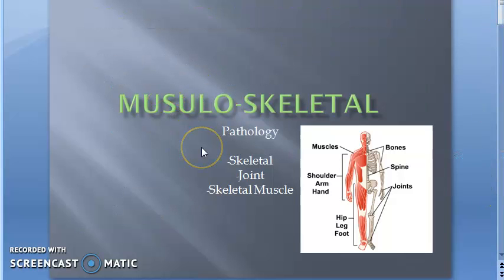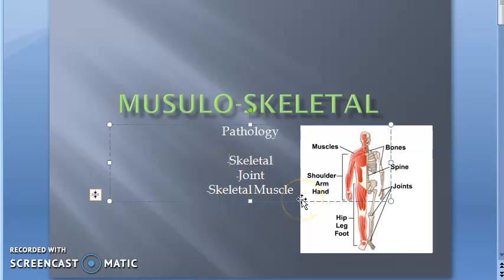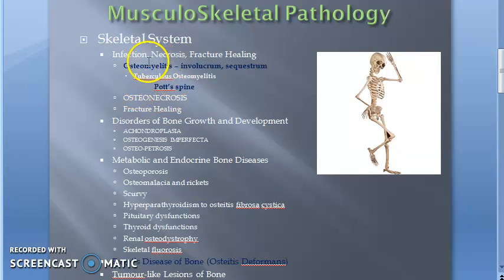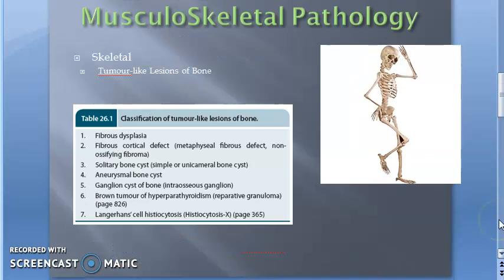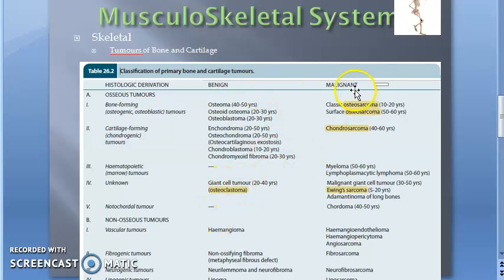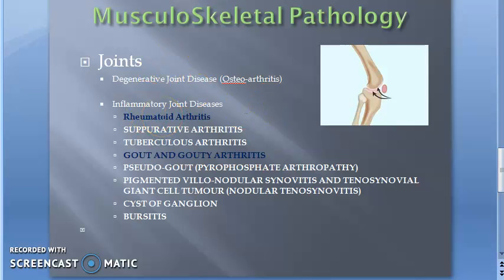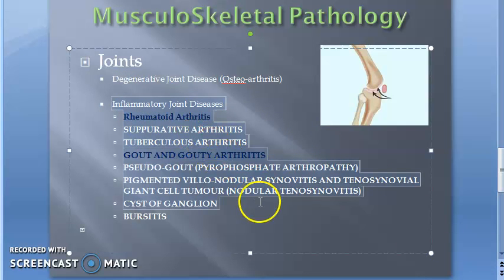Let's revise. In this video we covered musculoskeletal pathology — skeletal pathologies, joint pathologies, and skeletal muscle pathologies. Under the skeletal system, important topics are osteomyelitis, Pott's spine, Paget's disease of bone, tumor-like lesions, and tumors of bone and cartilage including osteoclastoma, osteosarcoma, chondrosarcoma, and Ewing's sarcoma. In joints, rheumatoid arthritis and gouty arthritis are important. Osteoarthritis is degenerative; rheumatoid and gouty arthritis are inflammatory.